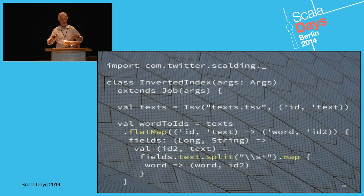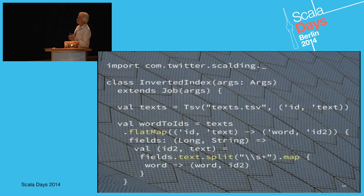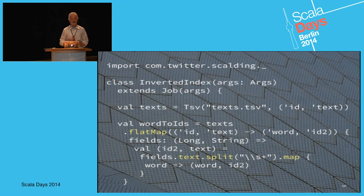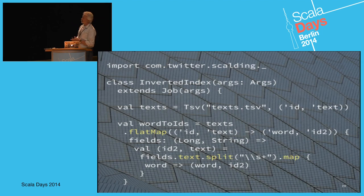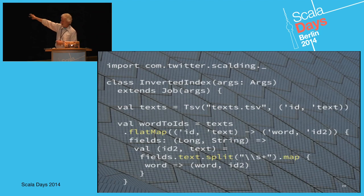They wrote an API called Scalding on top of Cascading. With one import statement, I read some tab-delimited data from a Hadoop path and introduce a schema using Scala symbols with single ticks — the first field is the document ID (a Long) and the rest of the line is the document text. Then we just slam the data with our collection combinators — flatMap over each line to split into words.